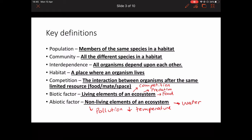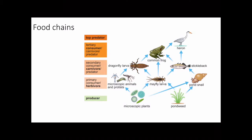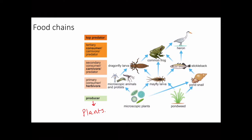Next we're going to talk about food chains. Just make sure you are familiar with these terms in bold: top predator, consumer, carnivore, herbivore, and producer. If not, go back to your notes from before the Easter break. Producers are always going to be plants — they get energy from the sun through photosynthesis, make their own food, and that energy is then eaten by things like mayfly larvae or pond snails.